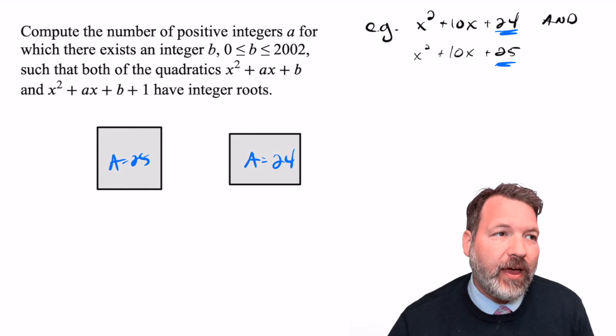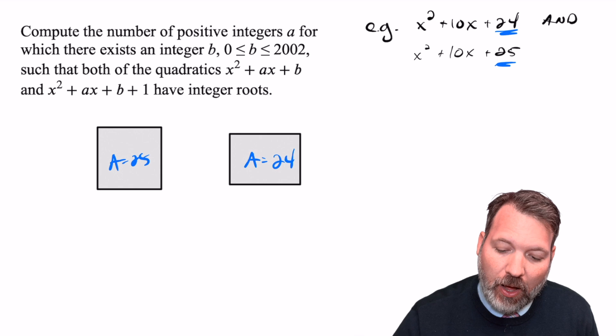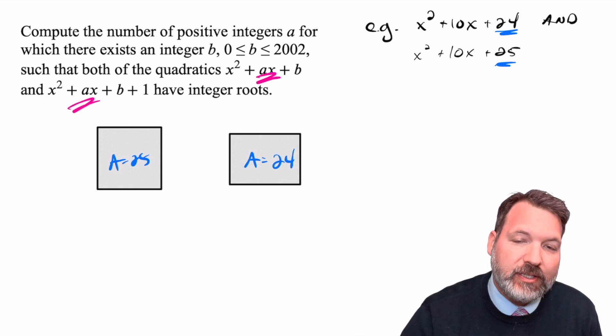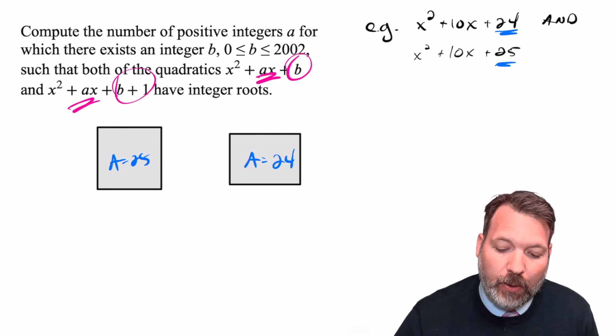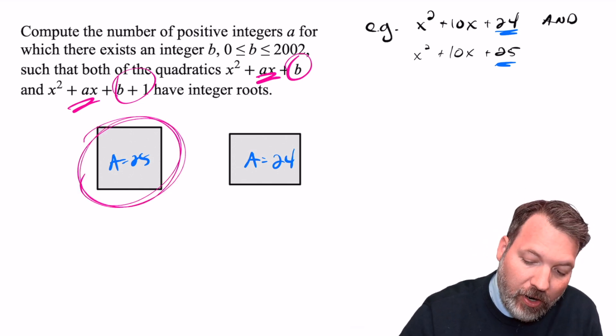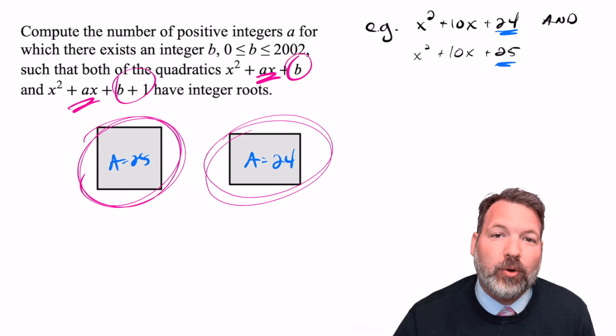All right, back to the problem here. We have figured out one particular case where we have that same sum in the middle, that linear term that has the same coefficient, but then whose constant terms are one apart. And we can see that case comes from the area of a square compared to the area of an almost square, but not quite square rectangle.